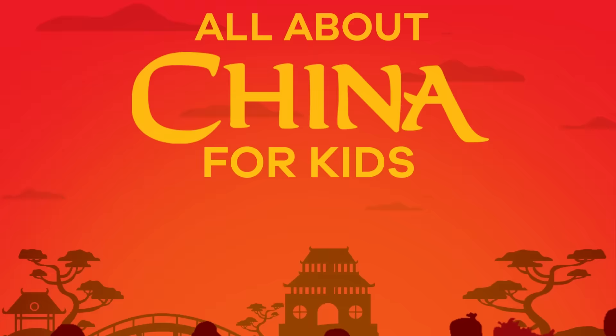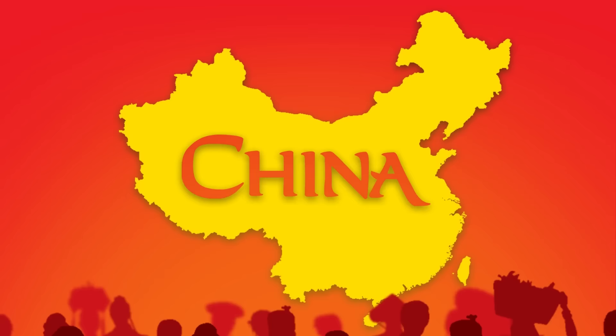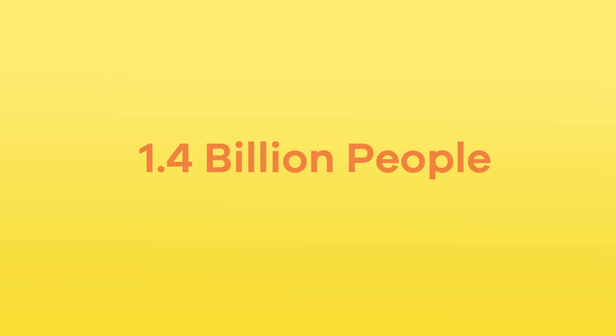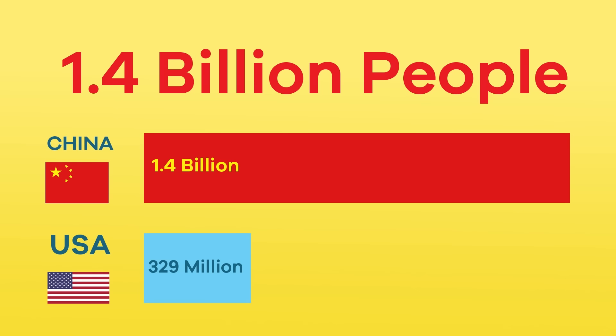All About China for Kids. Do you know what the most populated country in the world is? If you guessed China, you are right! The population of China is around 1.4 billion people — that is four times the population of the United States! Today, we are going to learn more about this country and its history.